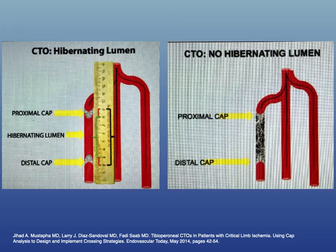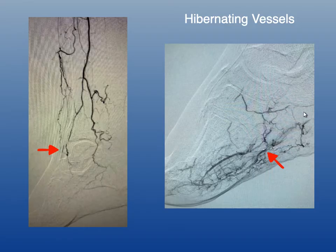This part of the CTO is typically not seen angiographically and is therefore angiographically occult. When you're dealing with no hibernating lumen, you basically have a chronically occluded tube from proximal to distal cap, and crossing it can be very difficult.